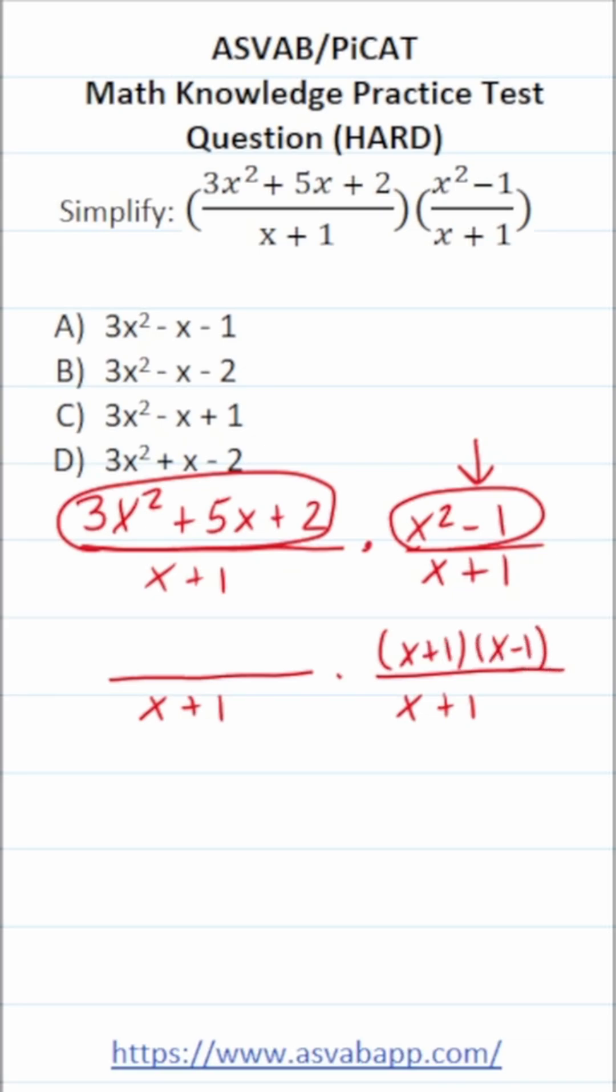All right, let's go ahead and work on factoring 3x squared plus 5x plus 2. If we can factor it, it's going to look like this: 3x times x. And we're looking for two numbers that multiply to positive 2, but will eventually add to 5x. So that's going to be plus 1 plus 2.